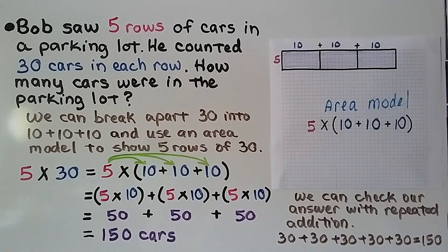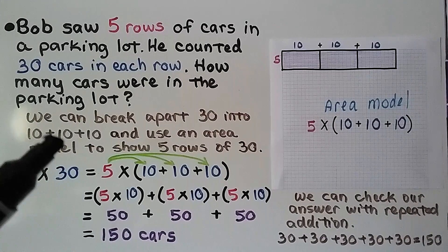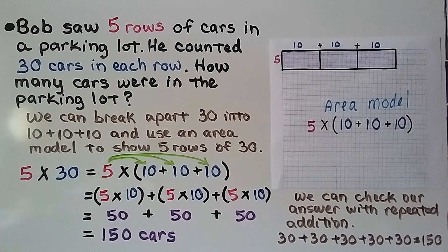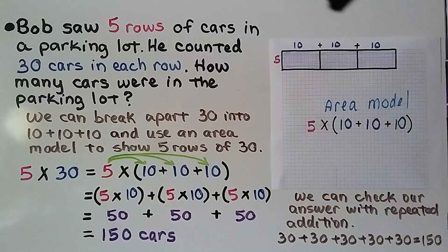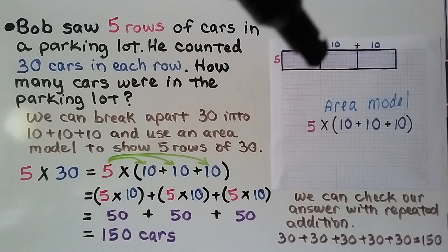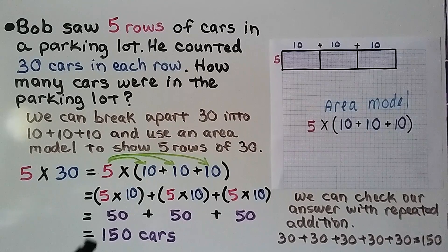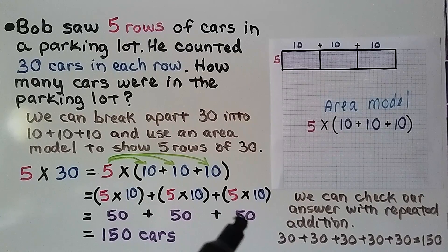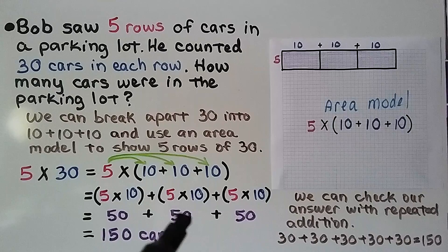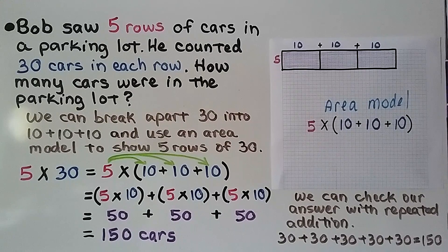Bob saw 5 rows of cars in a parking lot and counted 30 cars in each row. How many cars were in the parking lot? We can break apart 30 into 10 plus 10 plus 10 and use an area model to show 5 rows of 30. So we have 5 times 10 plus 5 times 10 plus 5 times 10, giving us 50 plus 50 plus 50.